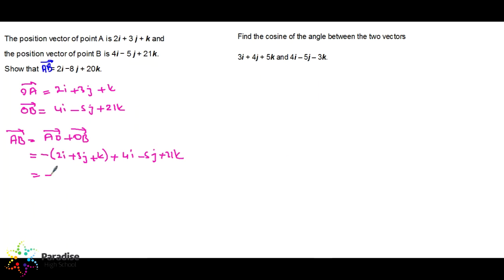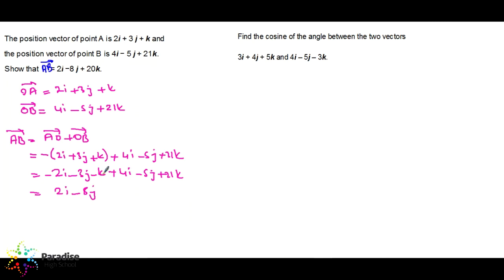Distributing the negative: −2i − 3j − k + 4i − 5j + 21k. Combining like terms: (−2+4)i = 2i, (−3−5)j = −8j, (−1+21)k = 20k. So AB = 2i − 8j + 20k — which proves it equals the given vector.